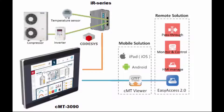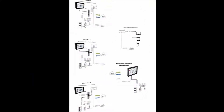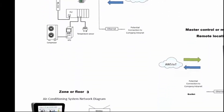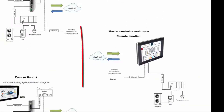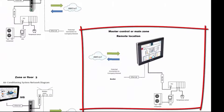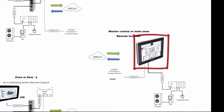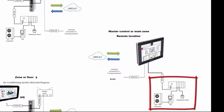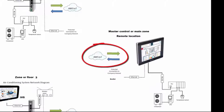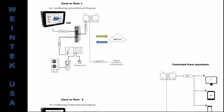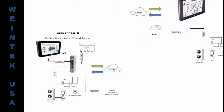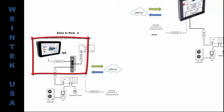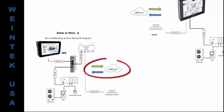Let's take a look at some practical applications of this newer technology. Here we have a multi-zone heating and cooling application. Here you can see we have a master zone — in this case it has a CMT-3090 PLC field equipment setup. Of course we have MQTT enabled with a connection established to the AWS. Here we have zones 1, 2, and 3, which are basically the same setup except you can see we have a CMT-SVR and IV-5 setup, and it also is connected to the AWS.